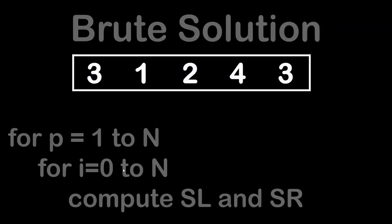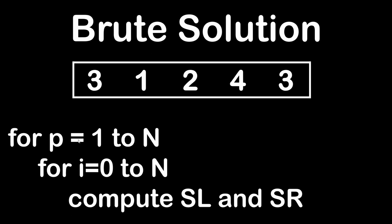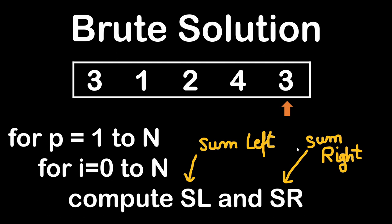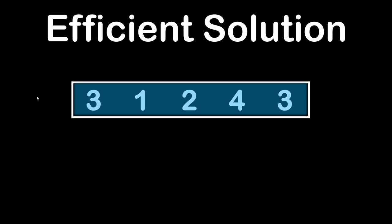Let's start by taking a look at the brute solution. It's relatively easy to put into place: for a position going from 1 to n, where n is the size of the array, inside this loop while changing the position, we go through the whole array visiting each element from 0 to n and calculate the sum of the left side and the sum of the right side, called SL and SR. As we can see, the solution reads the array more than once — it reads the whole array for each value of p, and obviously this is not the best way because going through the array so many times increases the time complexity.